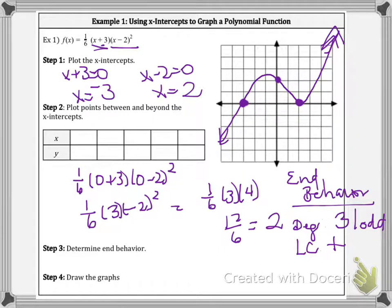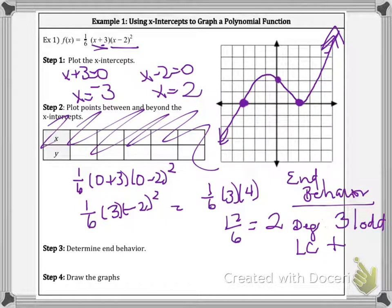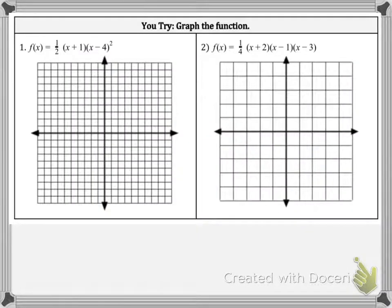This is a picture of the graph. We're not going to plot any points between the x-intercepts. We're just going to use what we know about x-intercepts, whether it bounces or passes through, and we're going to look at what is the degree of the polynomial by looking at how many times things repeat or not. So go ahead and try number 1 and 2, pause the video, and then I will show you the answers.